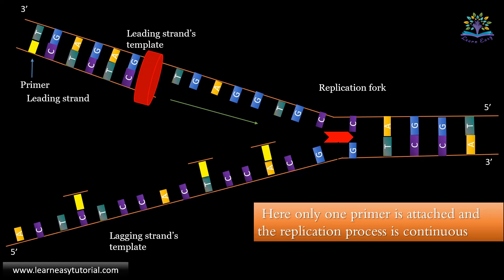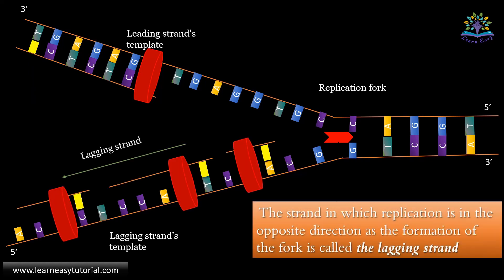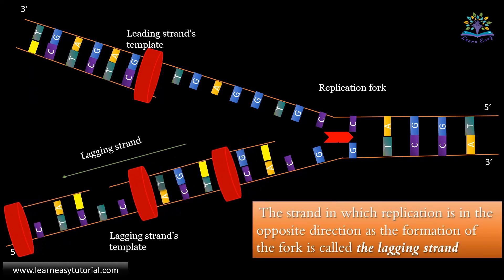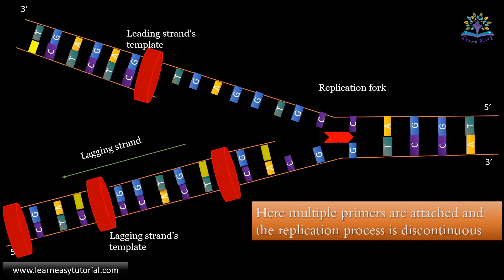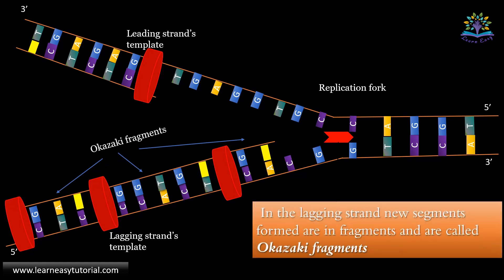The strand in which the replication is in the opposite direction as the formation of fork is called lagging strand. Here multiple primers are attached and the replication process is discontinuous.